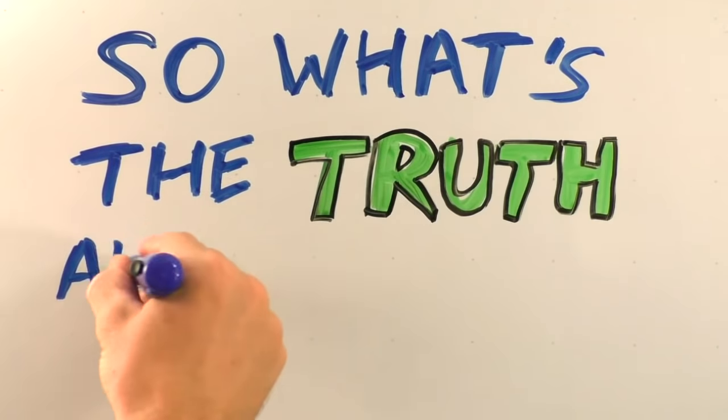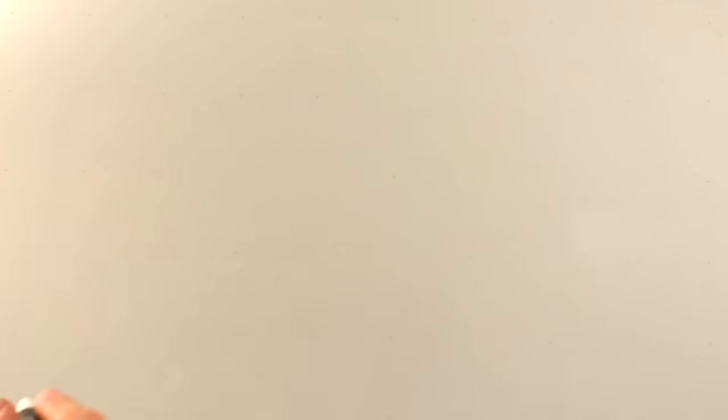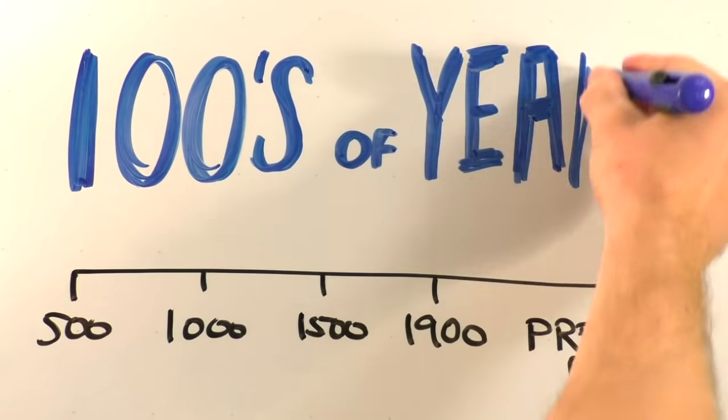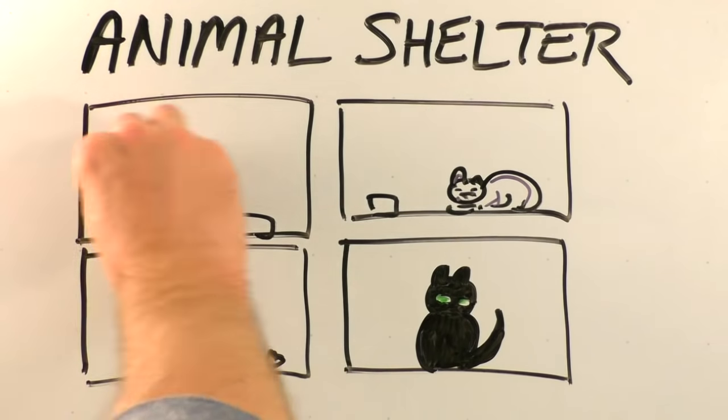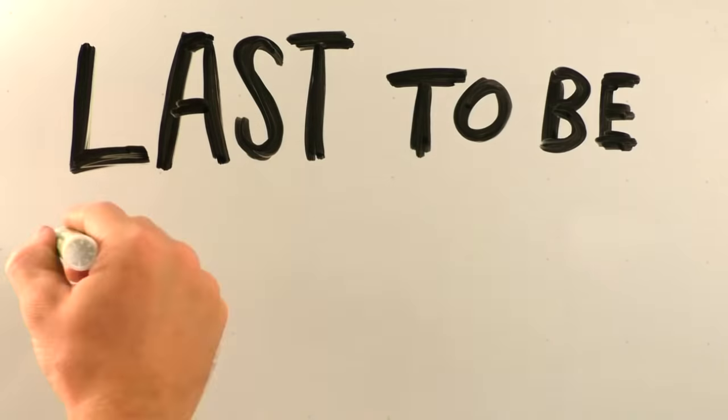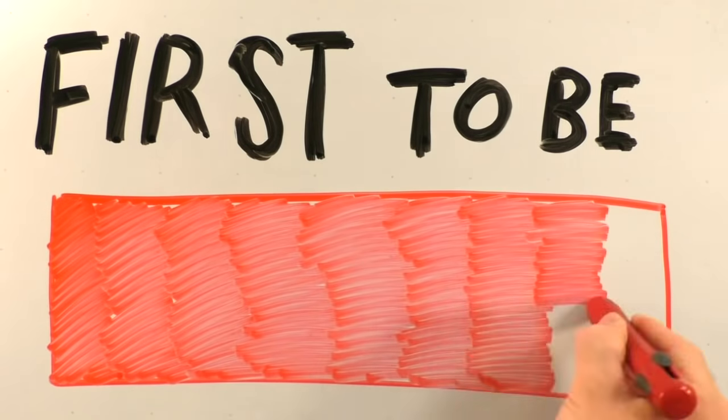So what's the truth about black cats? The truth is, these are superstitions from centuries ago. Sadly, black cats remain in shelters longer than cats with colored or pattern coats, and are often the last to be adopted and the first to be euthanized.